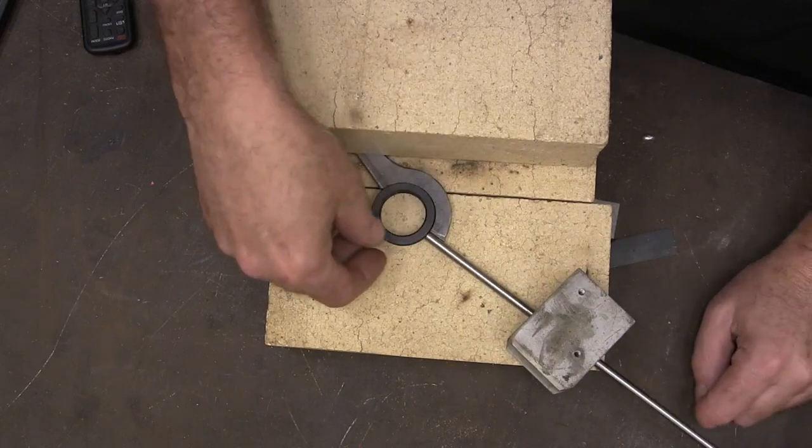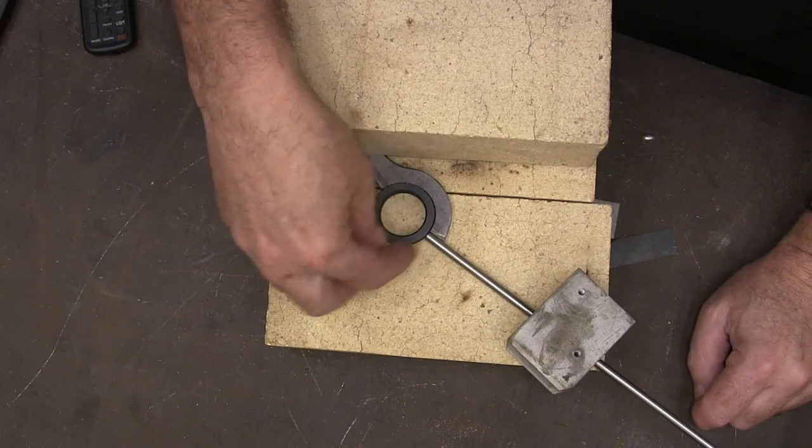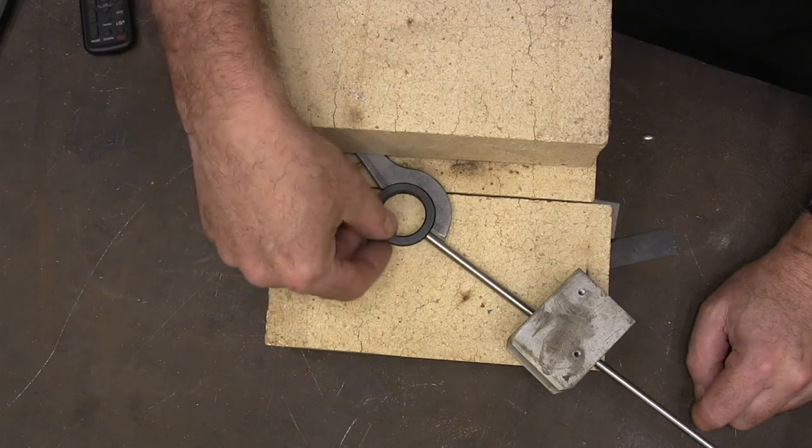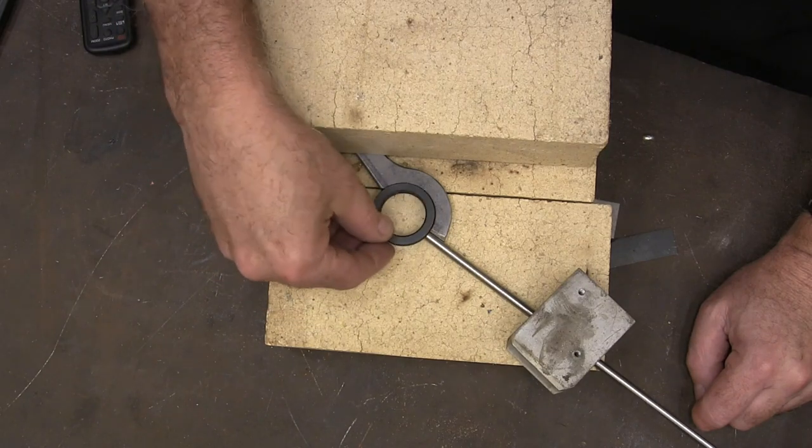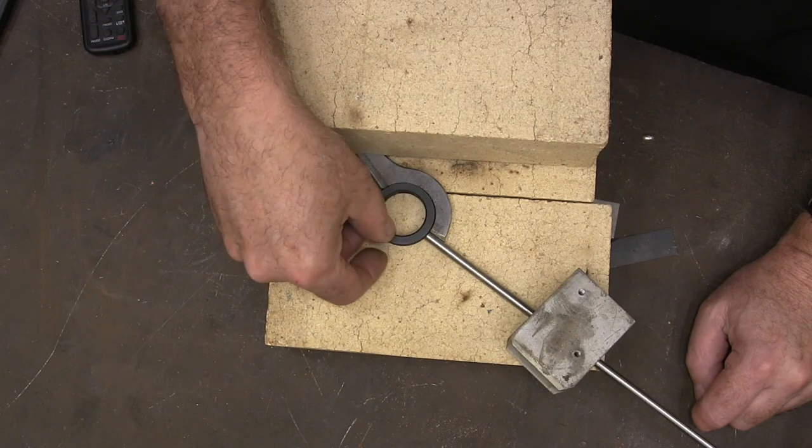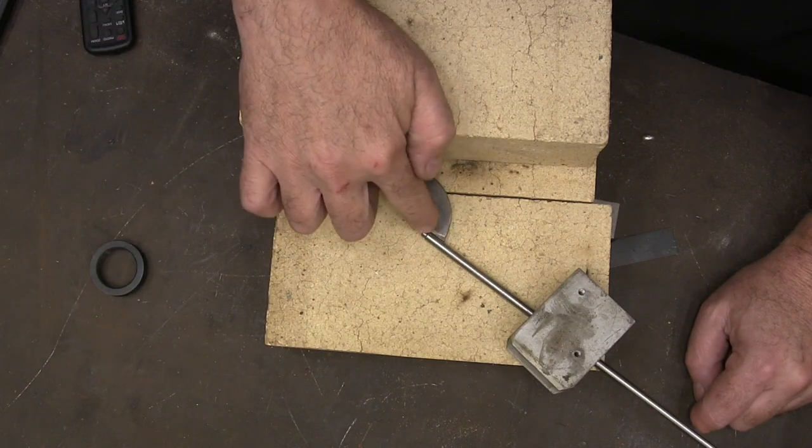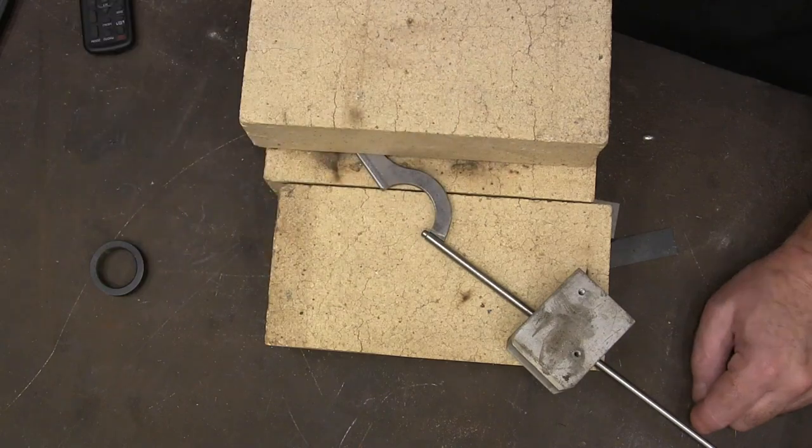All right, so now I've got our pin and our wrench put together here and I'm just getting everything lined up so that I make sure that that will slide in and it will lock in place. So now I'm going to weld right here and then flip it over and weld the other side.